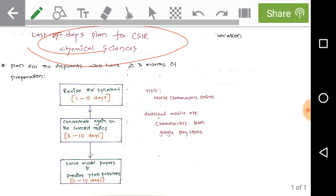This plan is for aspirants who have greater than or nearly three months of preparation on CSIR chemical sciences. For those aspirants, just divide the 15 days into three parts.